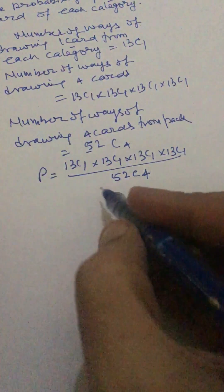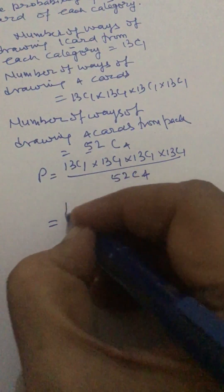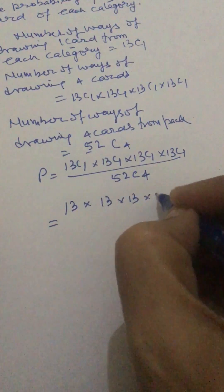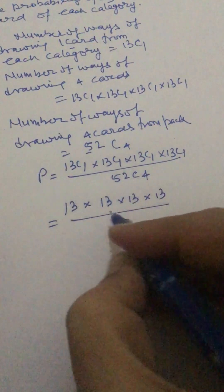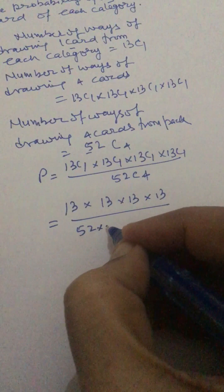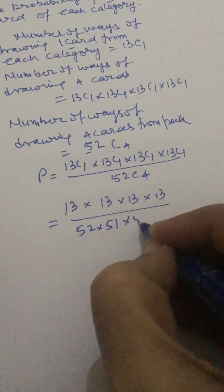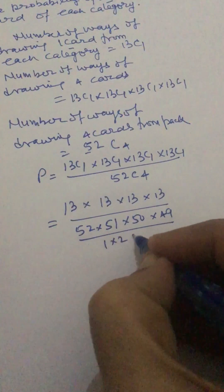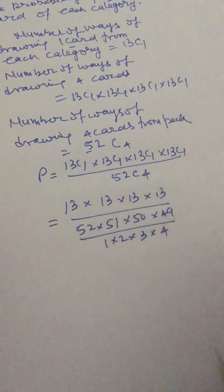We can further simplify. 13C1 is 13, so 13 × 13 × 13 × 13. And 52C4 is 52 × 51 × 50 × 49 divided by 4 factorial.